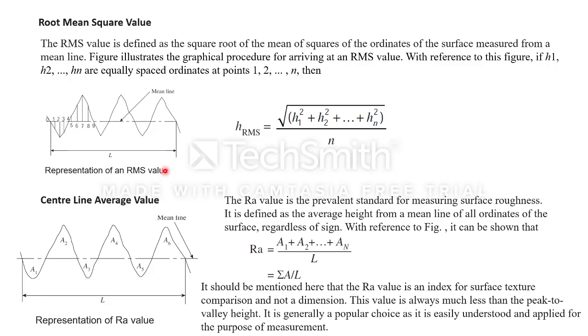The next method is the central line average value, which is a famous method used everywhere, also called as Ra value. The Ra value is the prevalence standard for measuring surface roughness. It is defined as the average height from the mean line, irrespective of the signs, either peak or valley. Here A1 represents the valley and A2 represents the peak from a mean line of all ordinates of the surface regardless of sign.